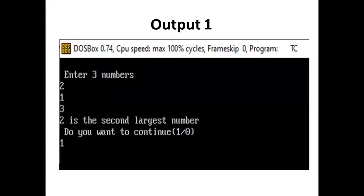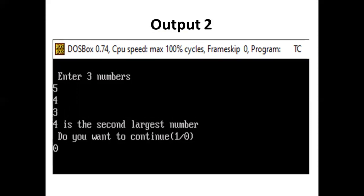Here is the output. Enter three numbers — user enters 2, 1, and 3 — output: 2 is the second largest number. Do you want to continue? Press 1 or 0 — user presses 1. Again, enter three numbers — user enters 5, 4, and 3 — output: 4 is the second largest number. Do you want to continue? Press 1 or 0 — user presses 0 to stop the process.